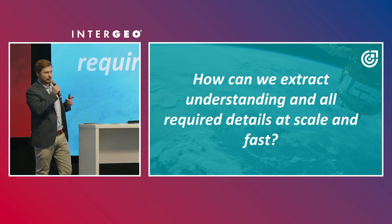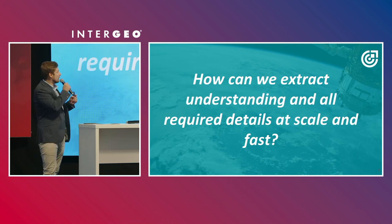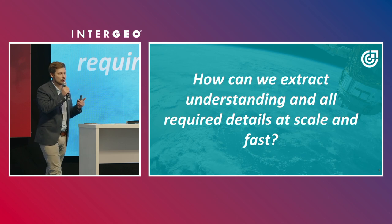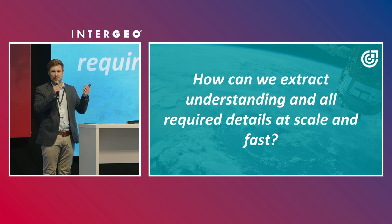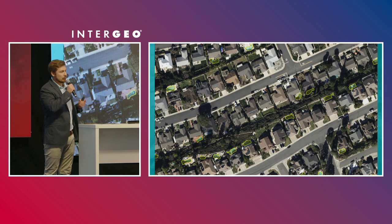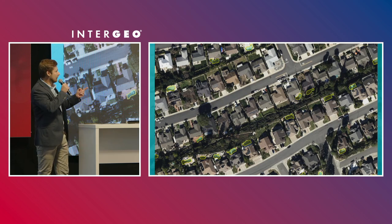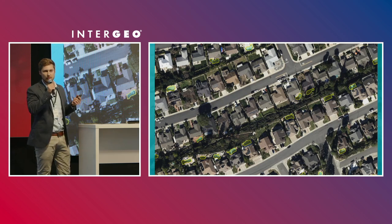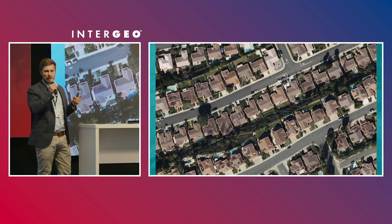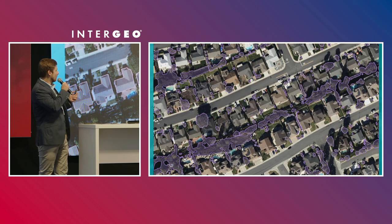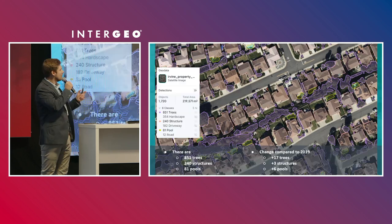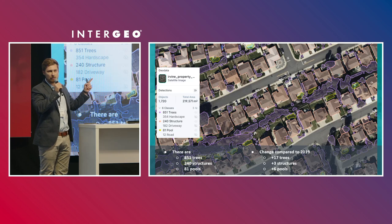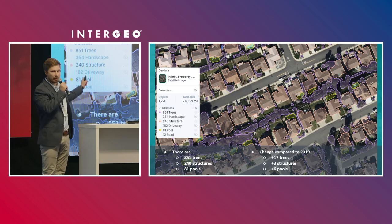There is a fundamental problem that we are solving here: how can we extract understanding and all necessary details from this Earth observation data at scale and fast? For example, on the same image you would like to get the swimming pools, or the building footprints, or the trees and count them. Ideally, you would like to get everything on one map and get a summary.